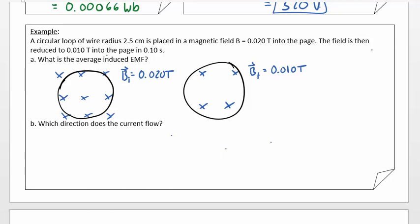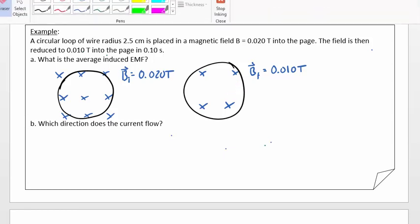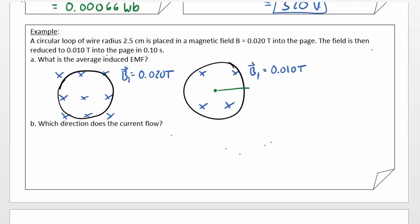And you can see, this is like my initial field and now my final field is 0.010 Teslas. Still in the same direction. Okay, and a reminder here that the radius of this loop is 2.5 centimeters, so 0.025 meters.